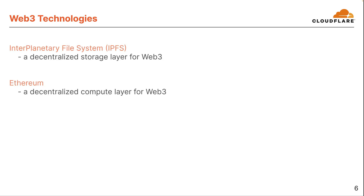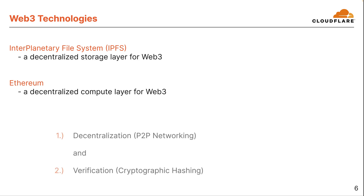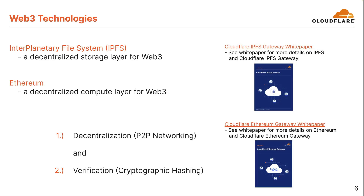First, there's Interplanetary File System, or IPFS, a decentralized storage layer for Web3, and correspondingly, Ethereum, a decentralized compute layer for Web3. Both have these two important Web3 tenets of decentralization via leveraging P2P networking and inherent verification via cryptographic hashing. These are much broader topics that can't be covered in detail in this short video. If you want more detail, check out the Cloudflare IPFS gateway and Cloudflare Ethereum gateway whitepapers.